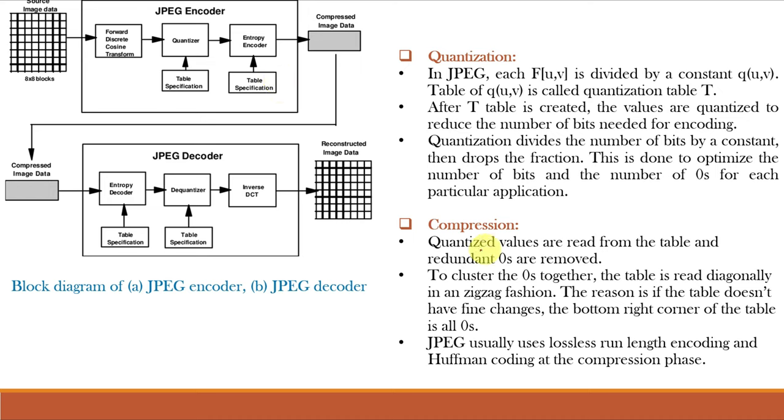After quantization, the values are read from the table and redundant zeros are removed. JPEG uses lossless or entropy coding such as run length coding and Huffman coding at the compression phase.